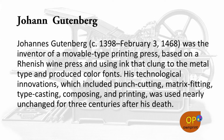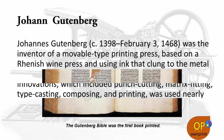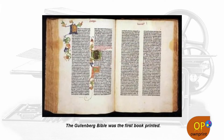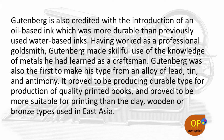Johannes Gutenberg was the inventor of a movable type printing press based on the Rhenish wine press, using ink that clung to the metal type and producing color fonts. His technological inventions — which included punch cutting, matrix fitting, type casting, composing, and printing — were used nearly unchanged for three centuries after his death. Gutenberg is also credited with the introduction of oil-based ink, which was more durable than the previously used water-based ink. Having worked as a professional goldsmith, Gutenberg made skillful use of his knowledge of metals. He was also the first to make his type from an alloy of lead, tin, and antimony, which proved more suitable for printing than the clay, wooden, or bronze type used in East Asia.